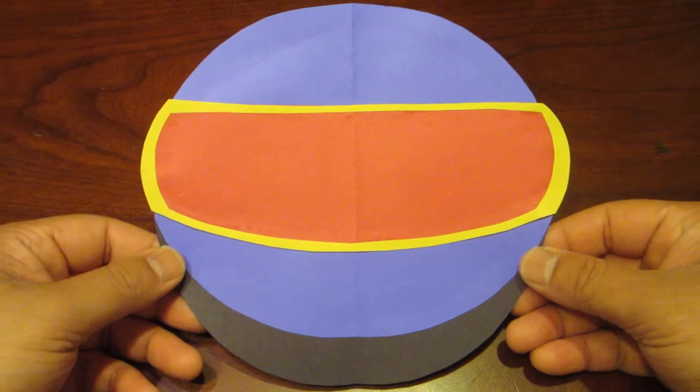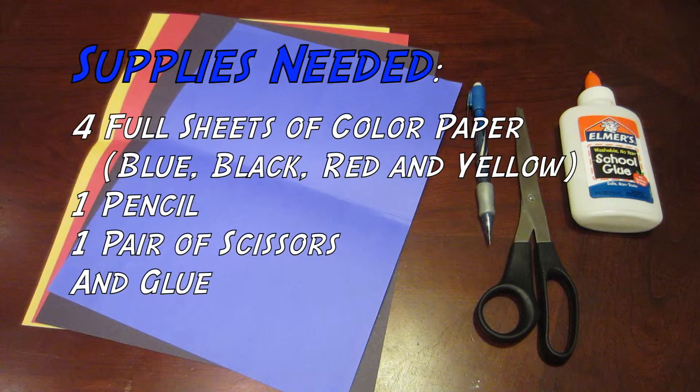Hi everyone, how you doing? Today we are making the leader of the X-Men, Cyclops. Supplies needed are four sheets of paper,